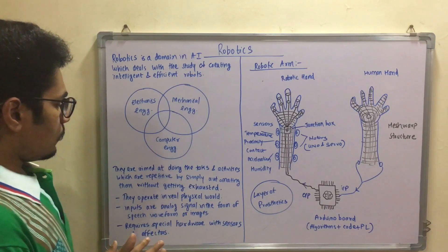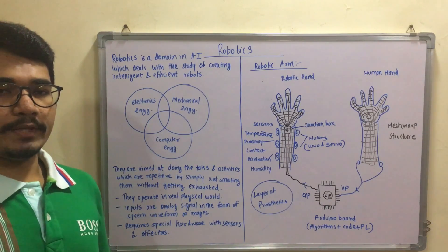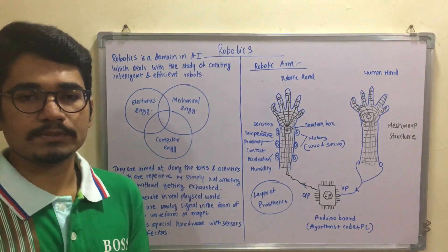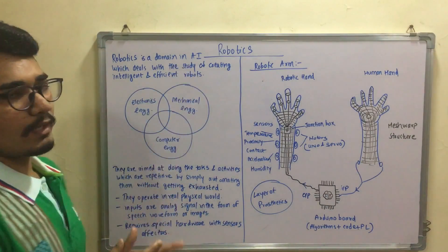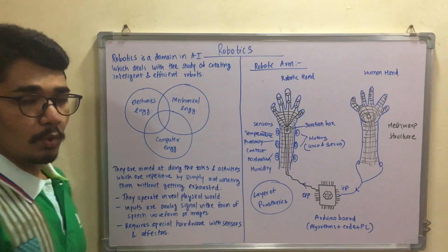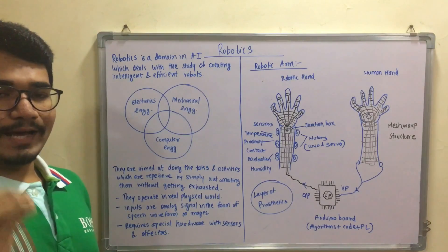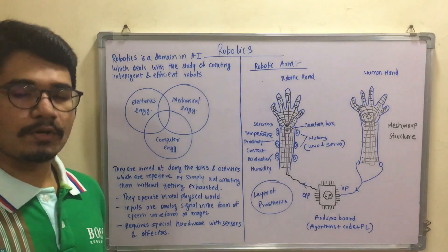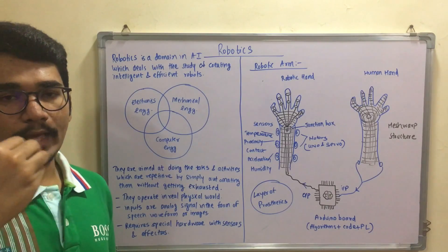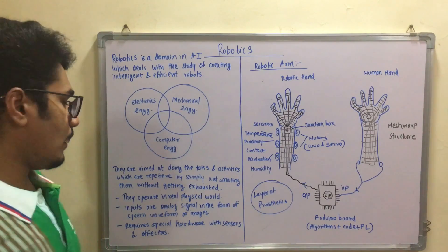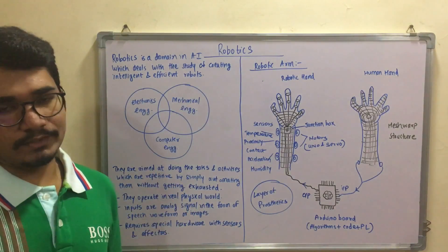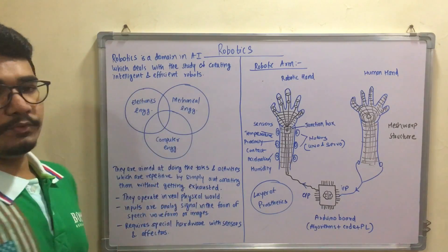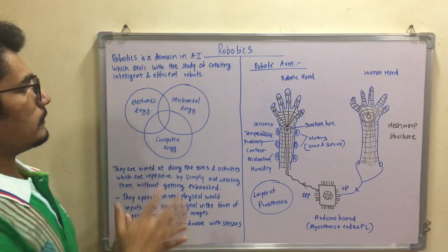These robots operate in the physical environment as compared to a lab environment — in lab environments experimental activities are done, but robots give their role in the physical world. All the inputs to these robots are either analog signals in the form of waveforms or simply images taken from the real-world surroundings. They then produce actions depending on the algorithm stored in their circuits or boards, and they require special hardware with sensors and effectors. This can all be related to the agent-environment concept.